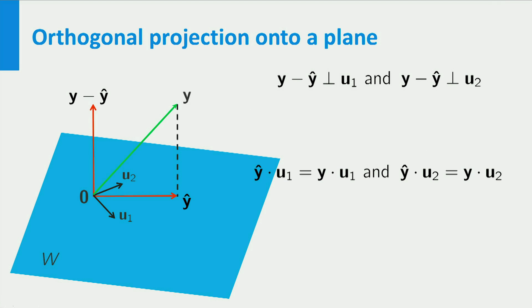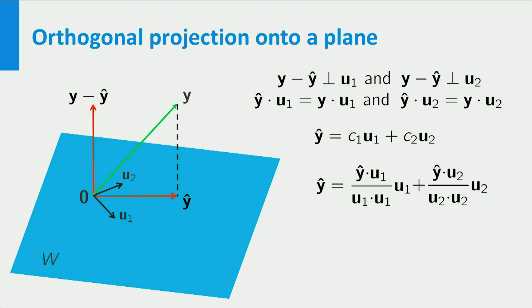On the other hand, you know that ŷ is a linear combination of u1 and u2. Now because u1 and u2 are orthogonal, you know from one of the theorems of linear algebra that coefficients of this linear combination are given by the inner product of ŷ with u1 divided by the inner product of u1 with itself, and similar for the term involving u2.